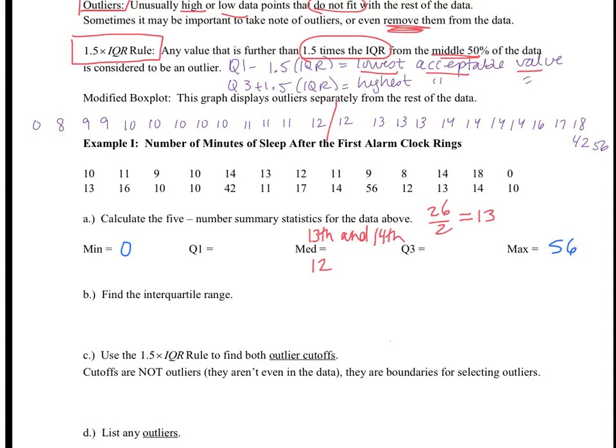Now, when our median is in between two values, that's going to take our data and separate it into the lower half and the top half. This lower 12 and this upper 12 are still considered when I consider my lower 50% and my upper 50%. Alright, so now when I go to find my Q1, there are 13 data points on the lower half. And if I do 13 divided by 2, I get 6.5,